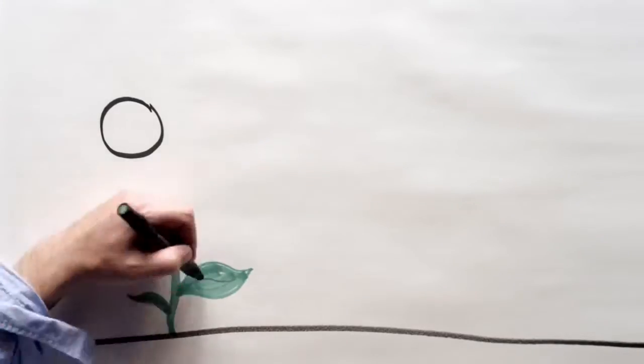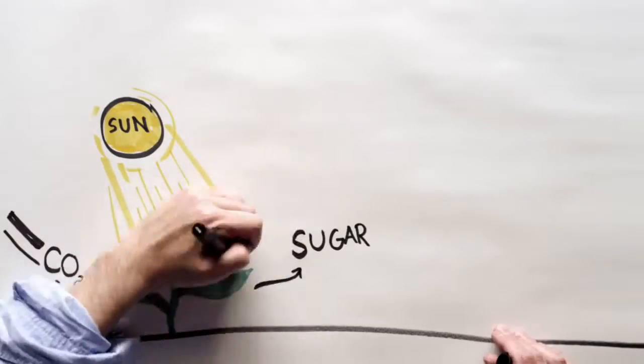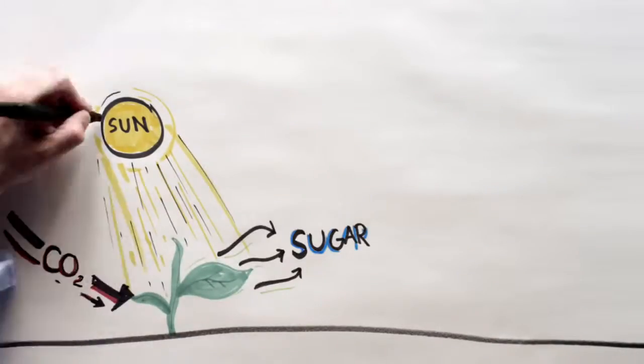Plants do this every day. They take in carbon dioxide, UV light, and they make a long-chain sugar molecule.